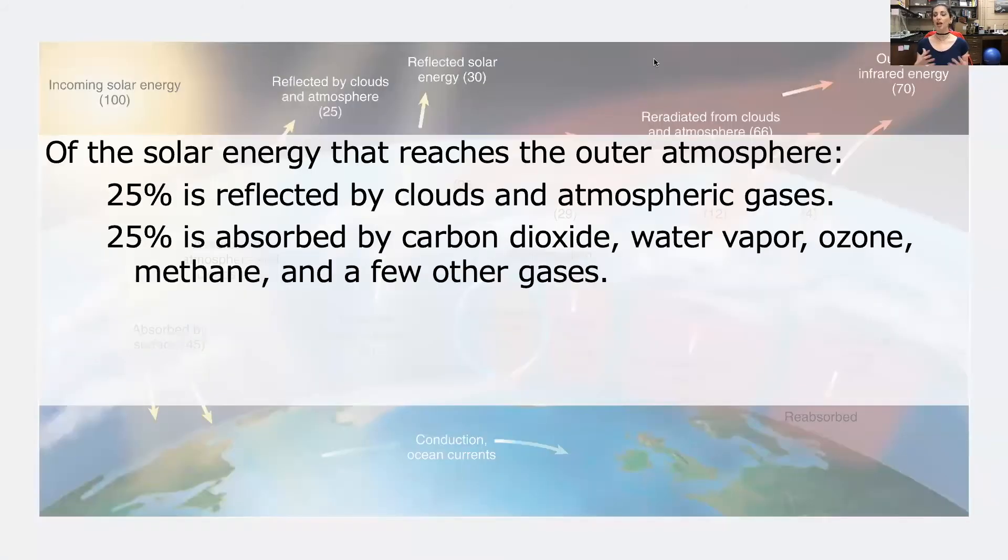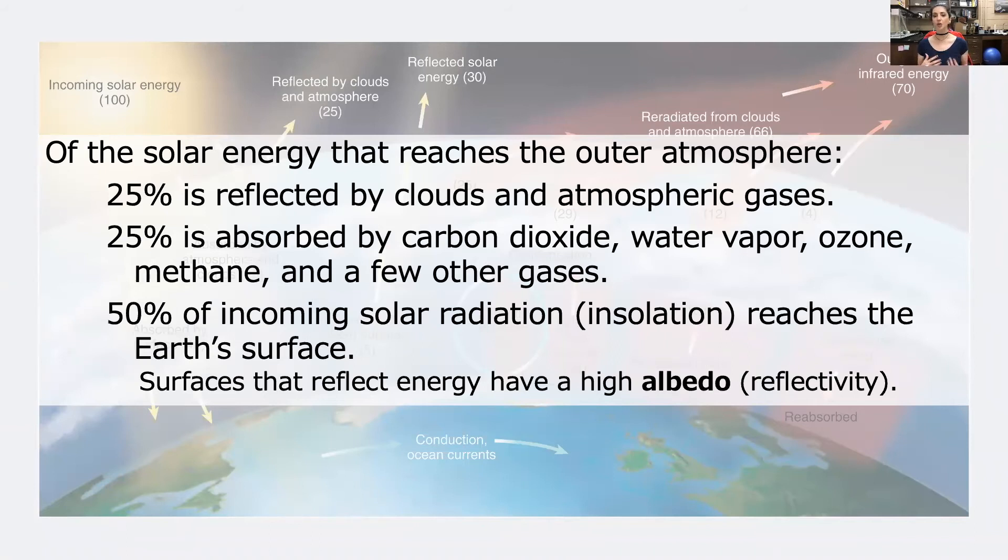Of the solar energy that reaches the outer atmosphere, about a quarter is reflected right back by clouds and atmospheric gases. Another quarter is absorbed by things like carbon dioxide, water vapor, ozone, methane, and a couple of other gases. The other 50% of incoming solar radiation, also called insolation, reaches the earth's surface. Most of the energy that reaches the earth's surface is re-emitted from the surface as long-wave infrared energy. Gases and aerosols in the atmosphere can absorb and re-radiate most of that energy back to earth, which helps to keep the surface warmer than it really should be otherwise. This entire phenomenon is called the greenhouse effect. We do need to consider that different surfaces reflect energy differently. We call that albedo or reflectivity.